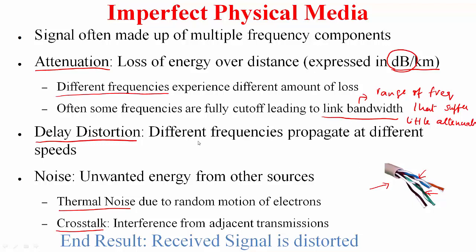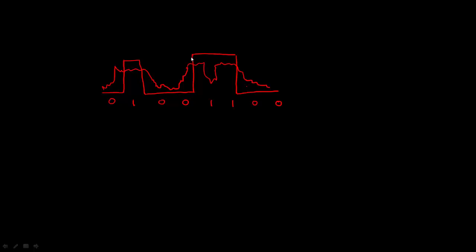So the end result of all this is the received signal can be quite distorted. Let me show an example. Suppose you were to send this particular square waveform through a medium. What you will receive is represented by this. As you can see, it is very squiggly because of the noise, and the attenuation as well as delay distortion widens the particular pulse.